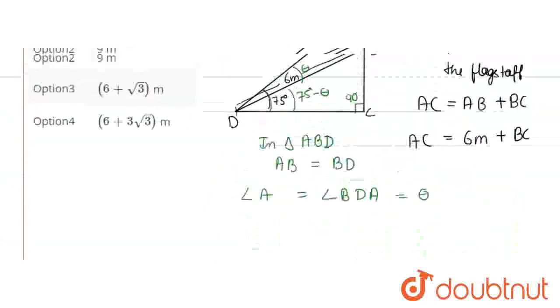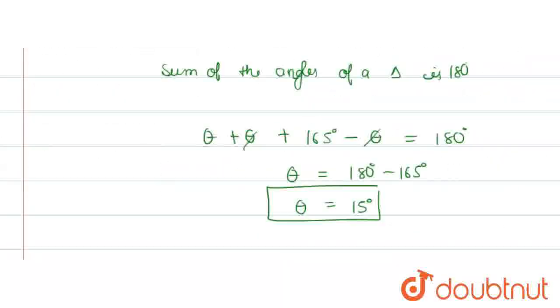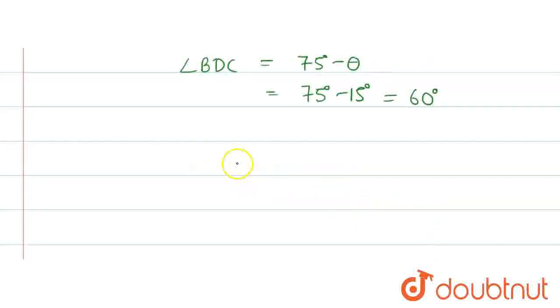As we get theta, angle BDC, which is equal to 75 degrees minus theta, will be 75 degrees minus 15 degrees. We will solve this and get 60 degrees.